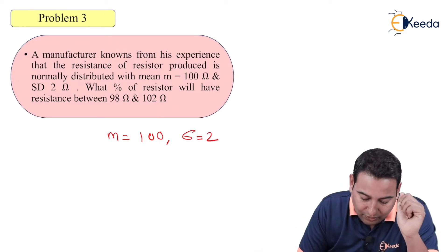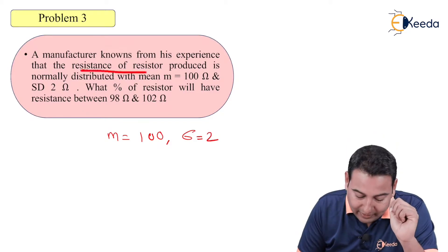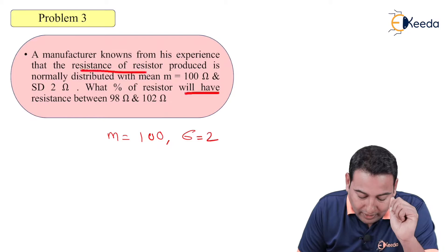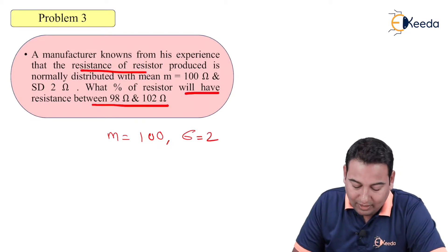Here mean and standard deviation of resistance is given, therefore resistance is x, and here we need to find this probability of resistance. That means x is given and we need to find its probability. Let's start.